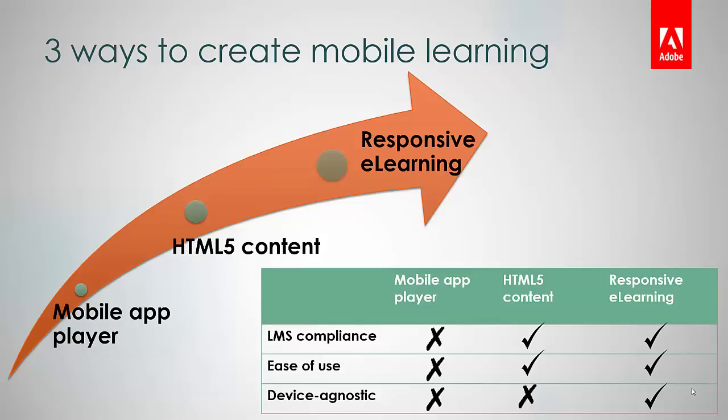There are 3 different ways to create mobile learning courses. The old school way is to view your existing e-learning courses on a mobile player app installed on your device. The newer and better way is to publish your course to HTML5 format that can be accessed through your device browser.